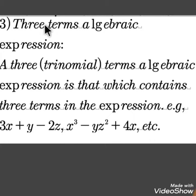Three-term algebraic expression: A three-term algebraic expression is that which contains three terms in the expression. It can also be called a trinomial algebraic expression, e.g., 3x plus y minus 2z, x cubed minus yz squared plus 4x, etc.